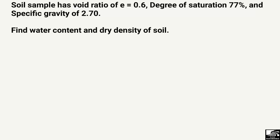The problem states that we have a soil sample with a void ratio of E = 0.6, a degree of saturation of 77%, and a specific gravity of 2.7. We have to find the water content and dry density of the soil sample.